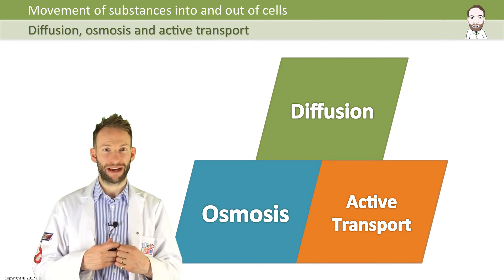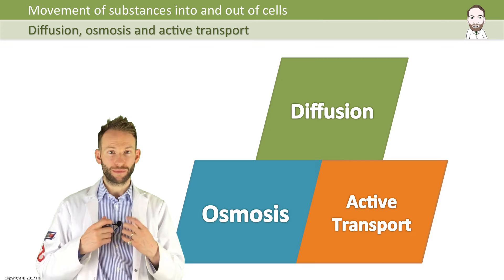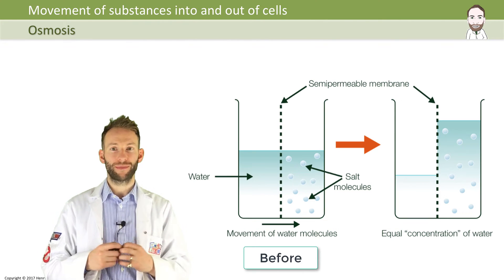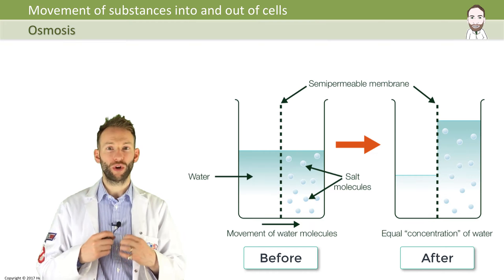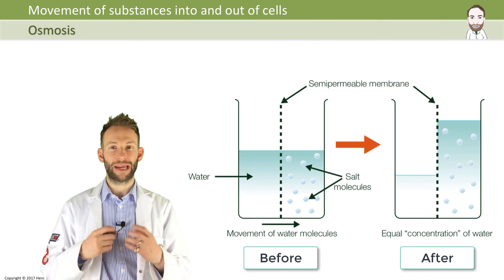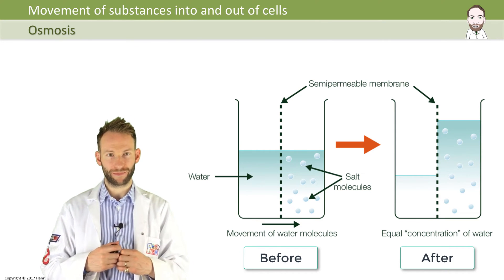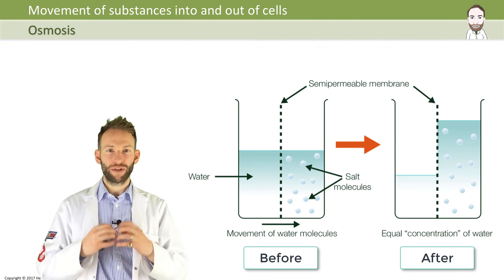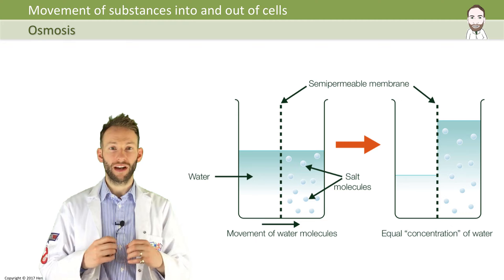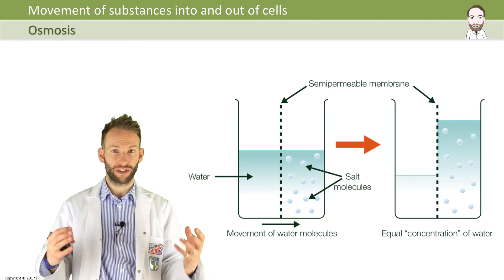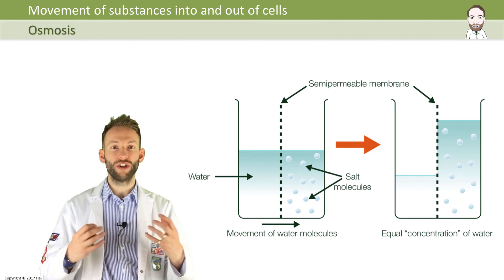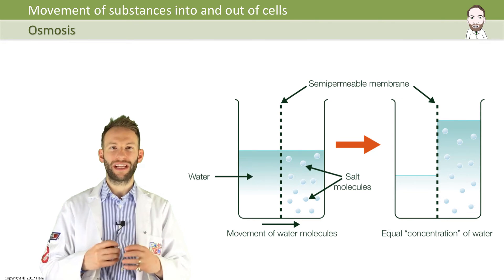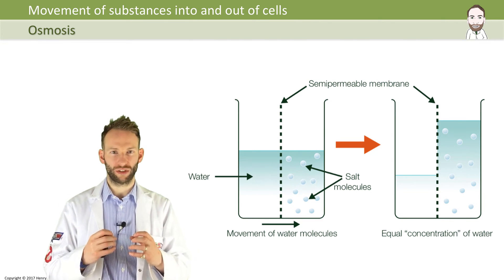Now in this part we're going to be talking about osmosis. Osmosis is all about water. Water moves from a more dilute solution to a more concentrated one across a partially permeable membrane. Where there is pure water — a very, very dilute solution — the more water that's in a solution, the more dilute it is, and that has what we call a very high water potential.